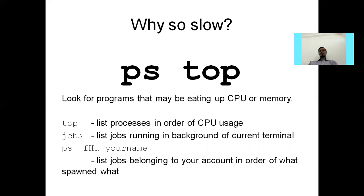If you want to know why your CPU or memory is running very slow, you can use the ps and top commands. The top command lists processes in order of CPU usage. The jobs command lists processes running in the background of the current terminal. The ps command is also used to list jobs belonging to your account.